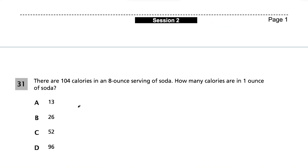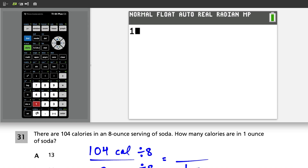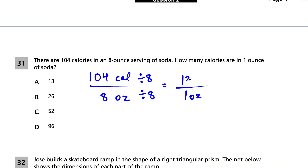Now we're moving to session two questions, where we get to use a scientific calculator. Question 31: there are 104 calories in an 8-ounce serving of soda. How many calories are in one ounce? We have 104 calories over 8 ounces. Divide top and bottom by 8: 104 divided by 8 equals 13. So there are 13 calories in one ounce of soda. Choice A is our answer.